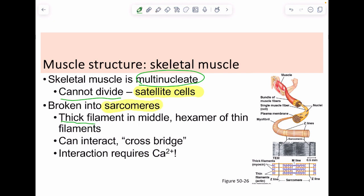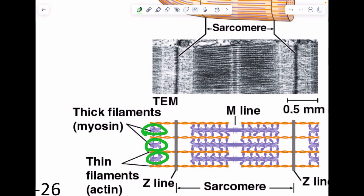They consist of a thick filament found in the middle, which we can see here in purple. Then you get a hexamer of thin filaments around it, meaning if you have a thick filament here, we'll have six thin filaments around it. They are capable of interacting with each other, and when they do, we refer to this as a cross bridge.